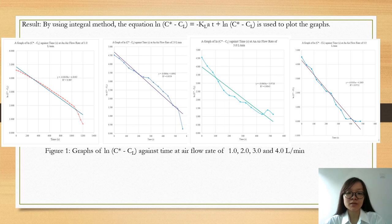By using the integral method, graphs of ln(C*-Cl) against time at different air flow rates were plotted and equation y = mx + c was obtained for each graph.